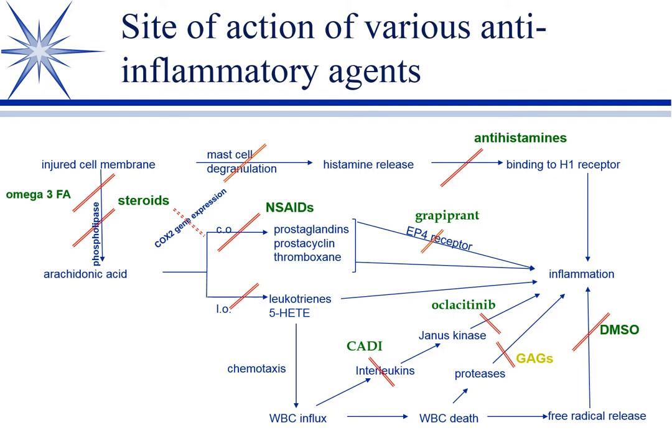Steroids are probably our best anti-inflammatory. They do affect gene expression — they inhibit cyclooxygenase-2 gene expression. But their major effect is they inhibit phospholipase. More correctly, they produce a protein that inhibits phospholipase. Blocking this so early is probably part of the reason that we see such profound anti-inflammatory effects — this is probably why steroids are so good as anti-inflammatories.